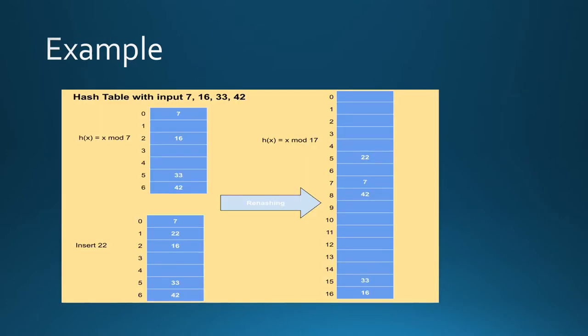Now let us see the example for rehashing. Here the values are 7, 16, 33 and 42 and the table size is 7.